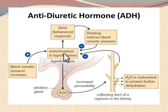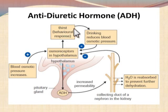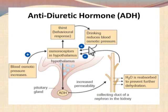When the osmoreceptors are stimulated in the hypothalamus, there is also a behavioral response: the thirst center is stimulated, so the person increases drinking of water. This increased drinking reduces blood osmotic pressure, which also gives negative feedback to the osmoreceptors in the hypothalamus. In this way the secretion of anti-diuretic hormone is regulated.